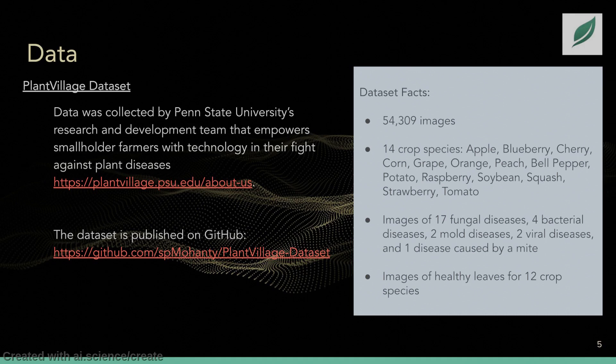For this project, we use the PlantVillage dataset, a public dataset collected by Penn State University's research and development team that empowers smallholder farmers with technology in their fight against plant diseases. The dataset contains more than 54,000 images of 14 crop species, for example apple, blueberry, corn, bell pepper, potato, soybean, and tomato.